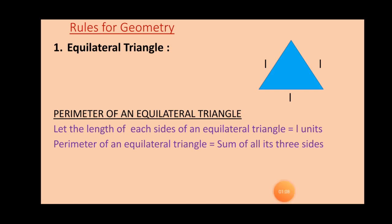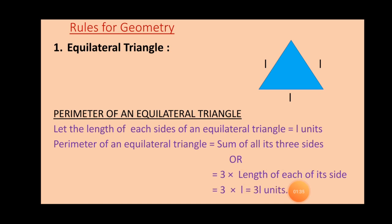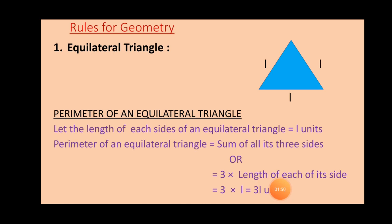To find the perimeter of an equilateral triangle, we take the sum of all its three sides to get the total distance for this closed figure. We can multiply the length of each side by 3, or take the sum of all three sides. Since each side is represented by small letter L, the perimeter equals 3L units.